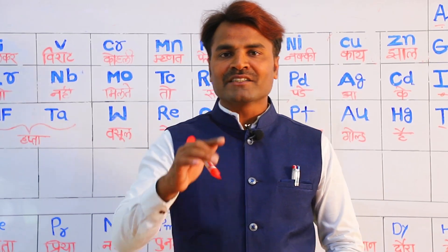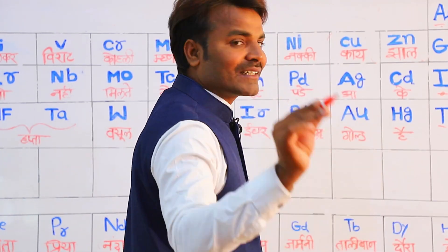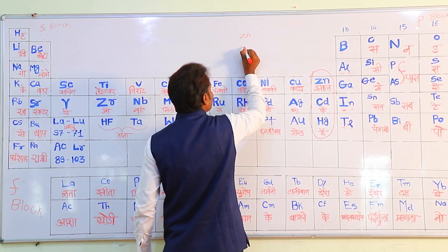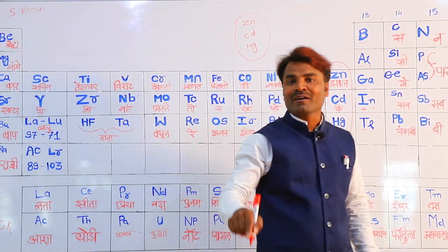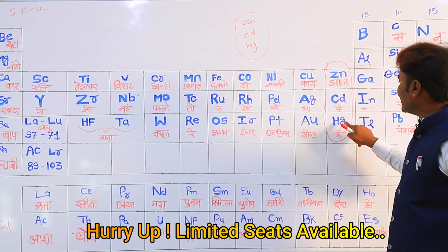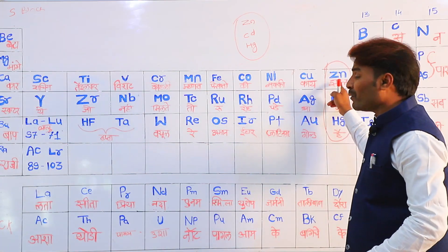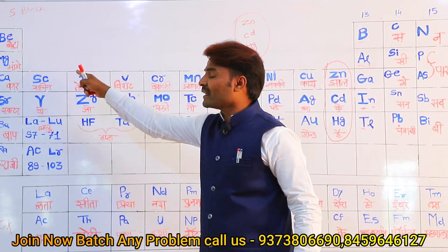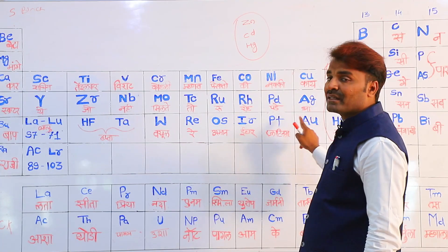Although Zinc, Cadmium, and Mercury are in D-block, they are NOT transition series elements. They are in D-block but why not transition series? These three elements — Zn, Cd, Hg — are in D-block, and their properties match with the previous nine elements in the series.